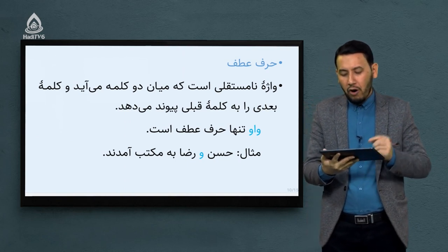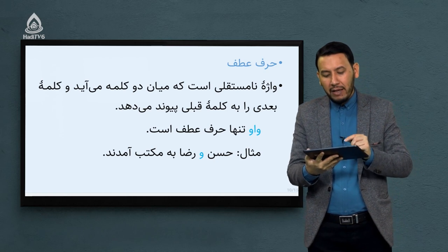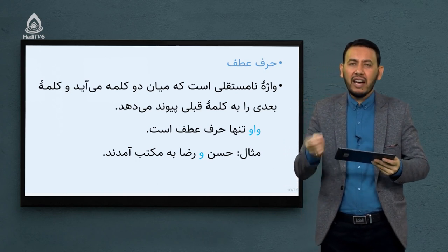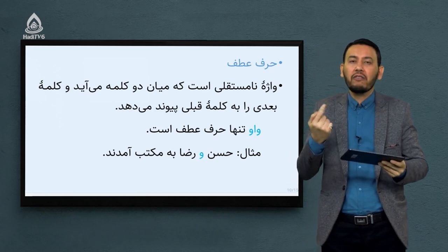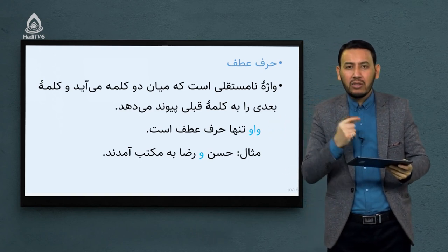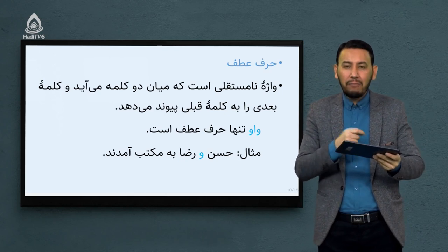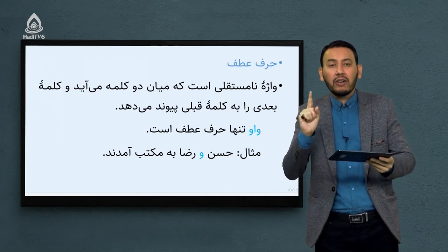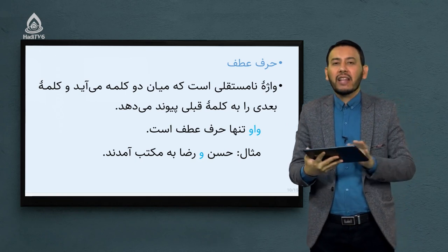حرف عطف چیست؟ واژه نامستقلی است مانند پیشینه‌ها که بین دو کلمه می‌آید و کلمه بعدی را به کلمه قبلی پیوند می‌دهد. در حوزه حرف عطف ما یک نشانه داریم و آن حرف «واو» است که در بین کلمات قرار می‌گیرد. مثال: حسن و رزا به مکتب آمدند. آن «واو» که بین «حسن» و «رزا» قرار گرفته واو عطف است و آن دو را به یکدیگر پیوند می‌دهد.